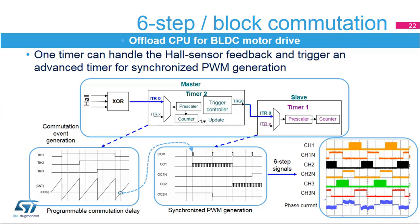The six-step drive, also called block commutation, is managed by chaining two timers: one handling the three hall sensor signals, while the other manages PWM generation synchronized with the rotor angular position, generating six successive steps. The first timer operates in clear-on capture mode, triggered by the three inputs. A compare register, here compare two, is responsible for adding a programmable delay between the raw angular position and the commutation time. Capture register one holds the timing interval between successive hall sensor edges and is necessary for the speed regulation loop. The compare two match event is propagated to the slave timer through the TRGO output.